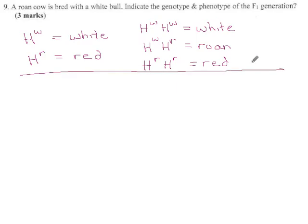So there's the basic information about the colors, and now they say a roan cow, so the mom is HWHR, heterozygous, is crossed with dad, who is HWHW.